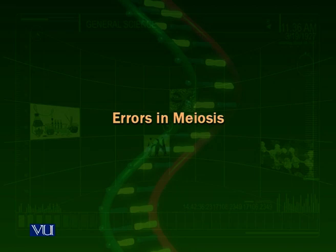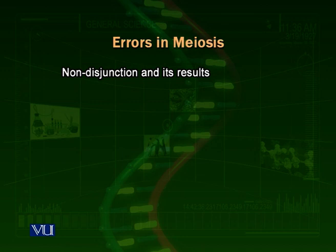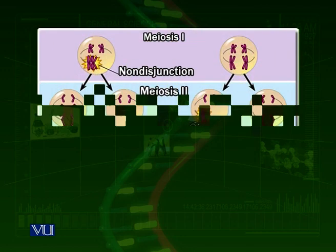Now, what happens if an error occurs in meiosis? Errors in meiosis could have serious consequences or disadvantages. Usually, errors in meiosis come from non-disjunction. To understand non-disjunction, we have to look at a diagram.